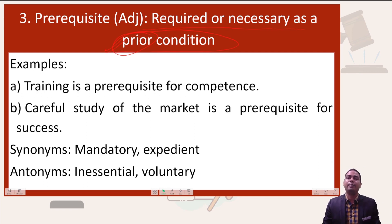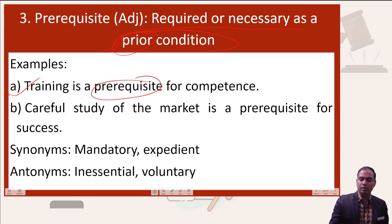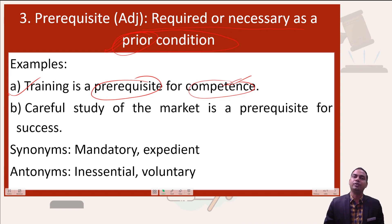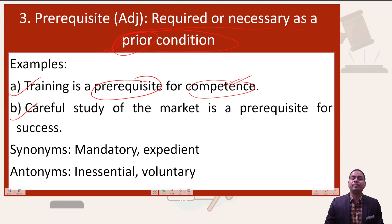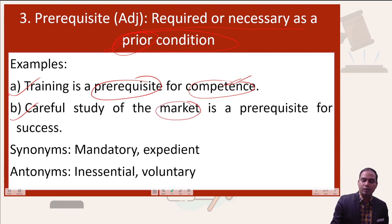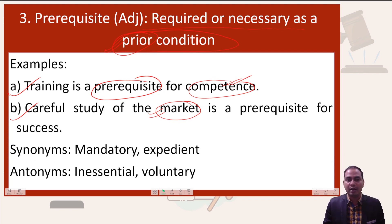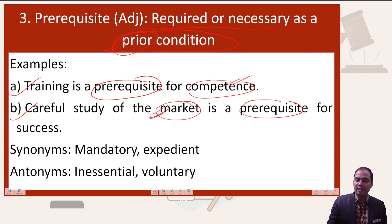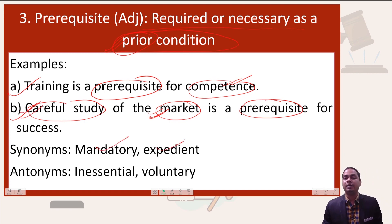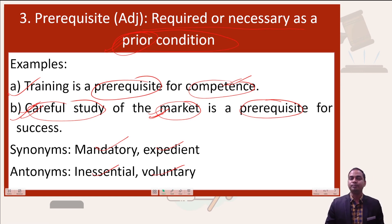There is no choice in the matter because if you cannot build that command, you cannot do well in the exam. Examples: training is a pre-requisite for competence — to gain competency, training is necessary. Another example: careful study of the market is a pre-requisite for success. Whatever work you are doing, you must first study and research before acting. Synonyms are mandatory and expedient; antonyms are inessential and voluntary.